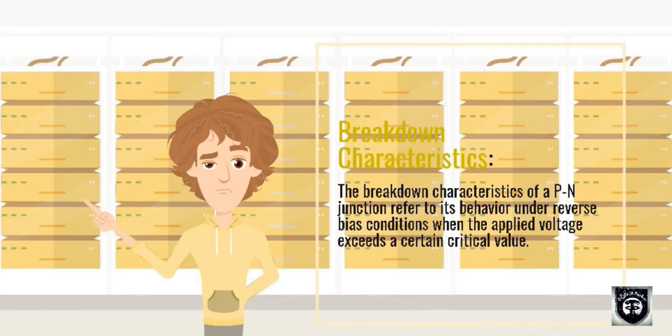Breakdown characteristics: The breakdown characteristics of a P-N junction refer to its behavior under reverse bias conditions when the applied voltage exceeds a certain critical value.